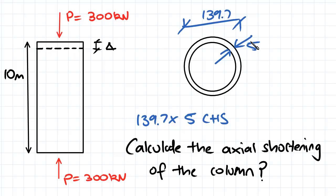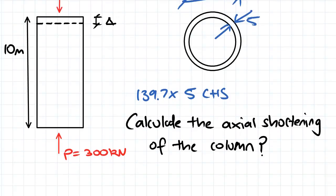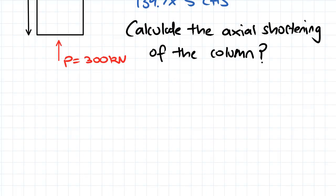And what we need to do is calculate the axial shortening of the column, which is shown here. So the first thing to do is to determine the cross sectional area.